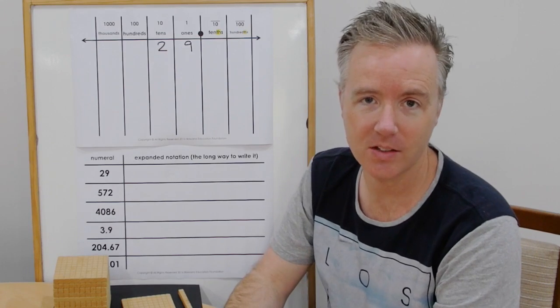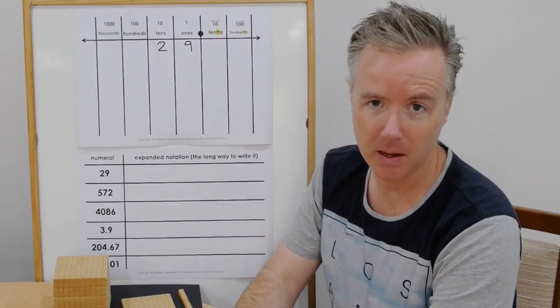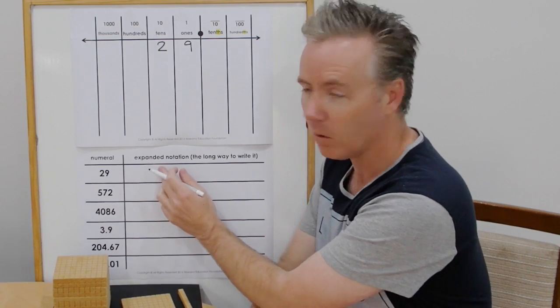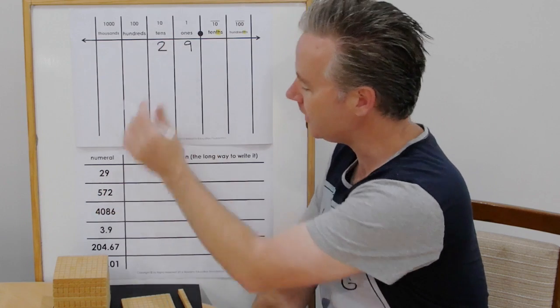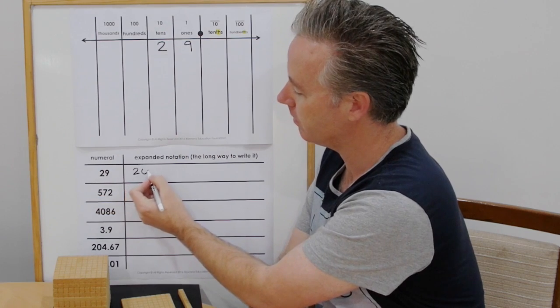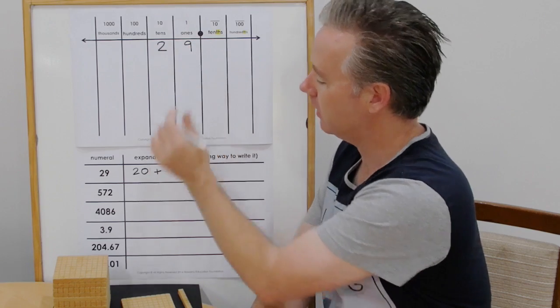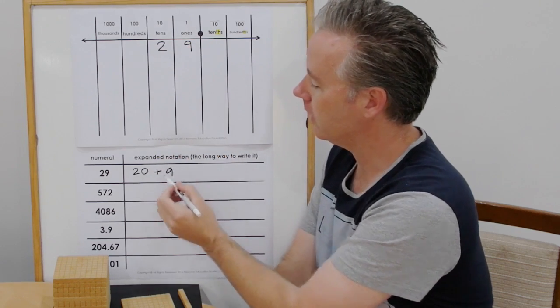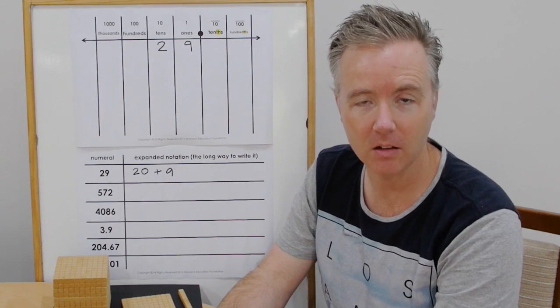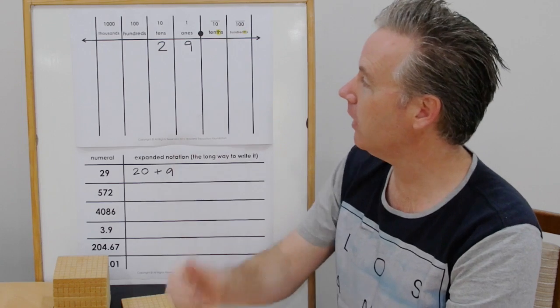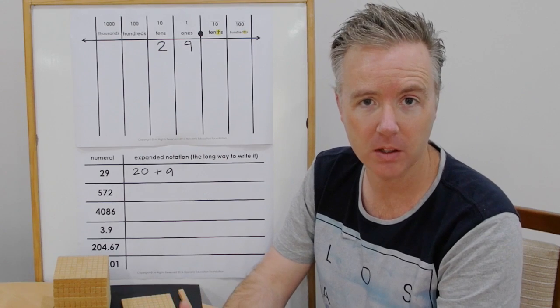Twenty-nine. Two tens and nine ones. So when we're going to write this out in expanded notation, watch how I do that. We have twenty, two tens, two tens and nine ones. So twenty-nine in expanded notation is twenty plus nine. Go and write that now on your sheet and also put in twenty-nine on the place value chart. If you need to pause the video, please do so.